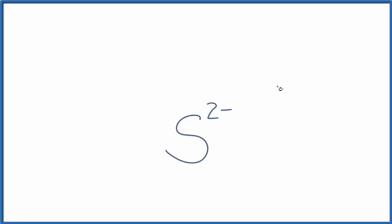To draw the Lewis structure for S2 minus, the sulfide ion, let's first draw the Lewis structure for just sulfur as it appears on the periodic table. On the periodic table, sulfur is a neutral element. It doesn't have a charge, so we'll get rid of our charge here and change the name to sulfur.